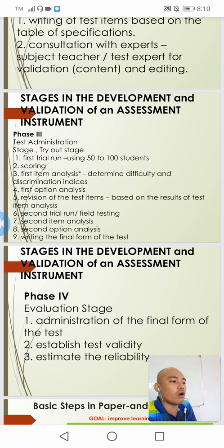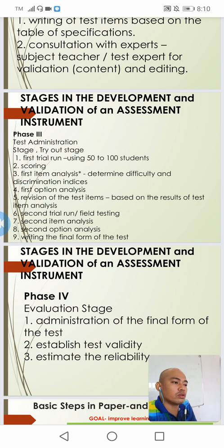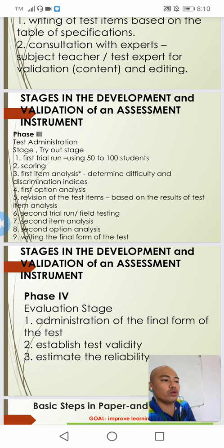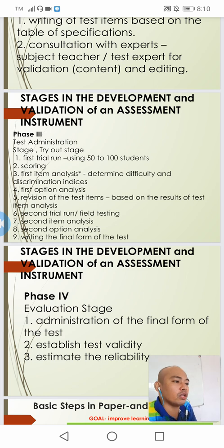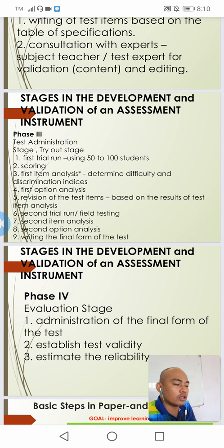We can also do option analysis if we are giving a multiple choice type of test — checking whether the choices given are effective distractors. Then we revise the test based on the results of the item analysis, determining which items will be rejected, which will be retained, and which need revision. This is the fifth sub-step in test administration.